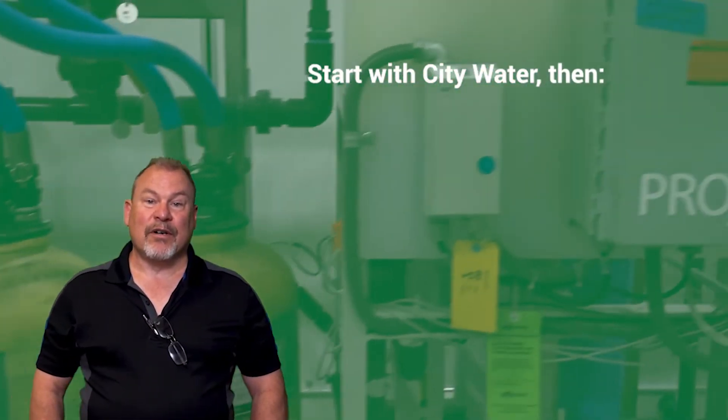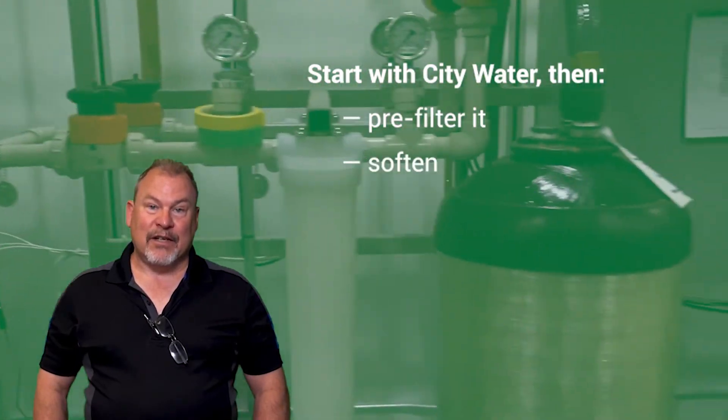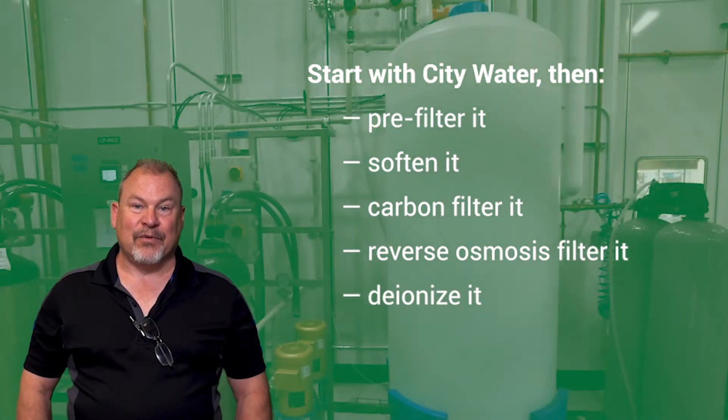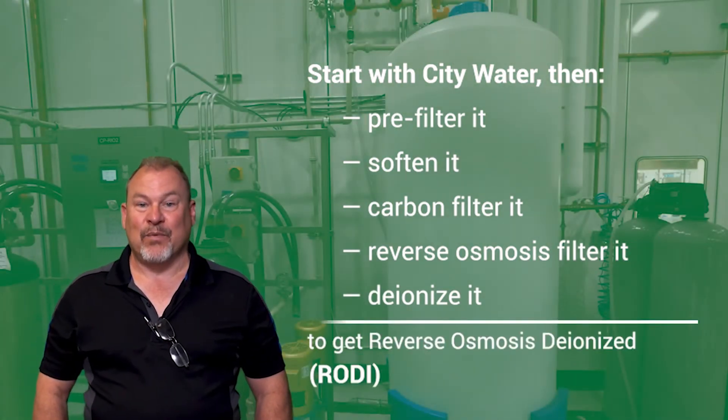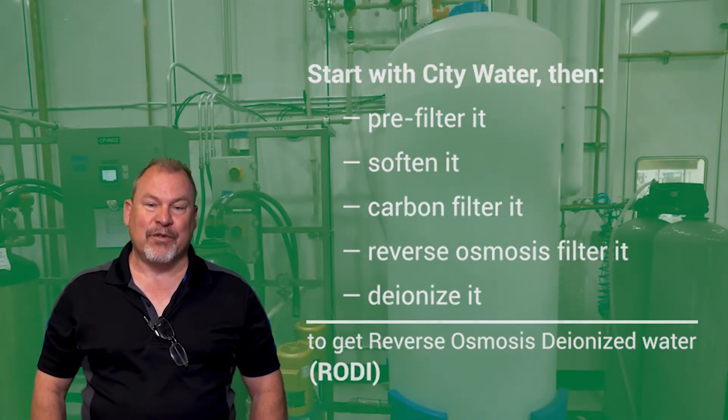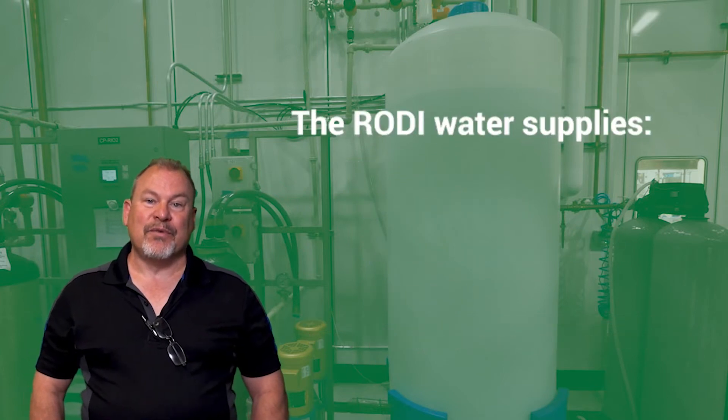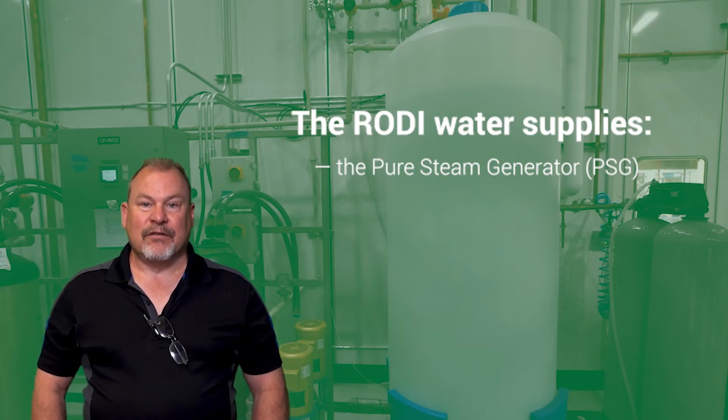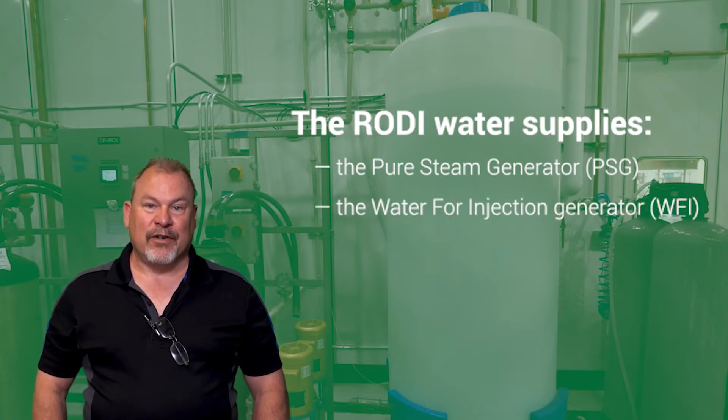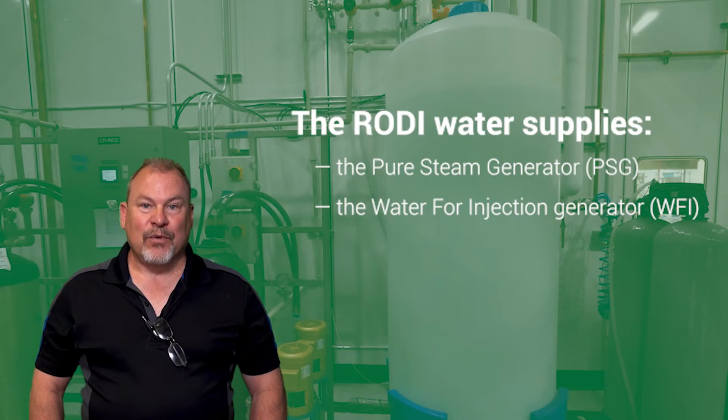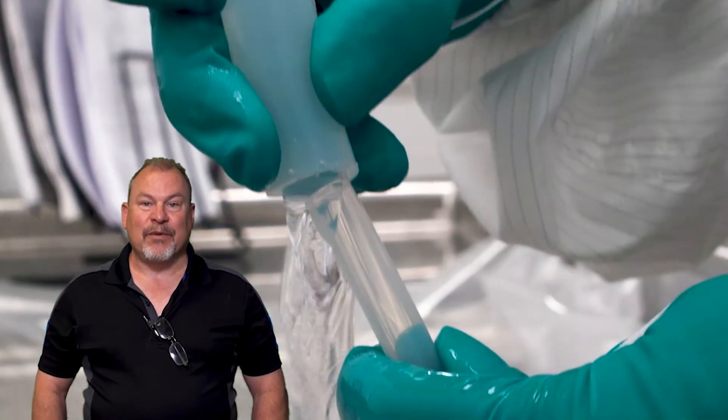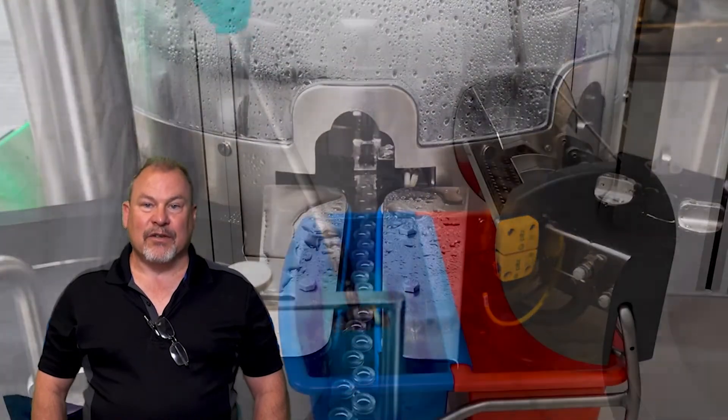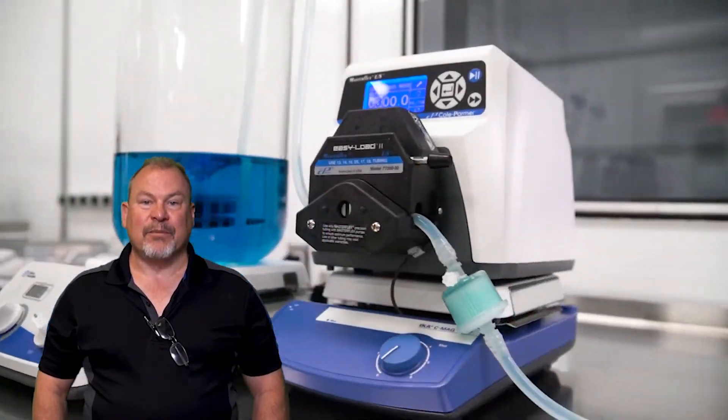We start with city water, pre-filter it, soften it, carbon filter it, reverse osmosis filter it, and then deionize it to manufacture reverse osmosis deionized water, or RODI water for short. The RODI water is used as a supply stock to the pure steam generator, or PSG, and for the water for injection generator, or WIFI for short. We use RODI water, pure steam, and WIFI to wash materials, run the autoclave cycles to sterilize equipment, to clean rooms, and to make injectable medicines. We do not want the water in the medicine we produce to make a patient ill.